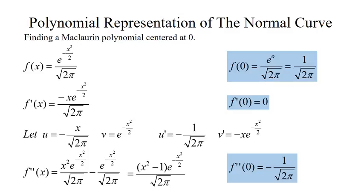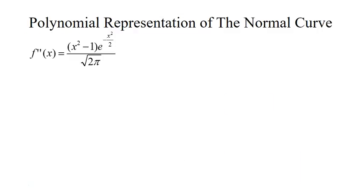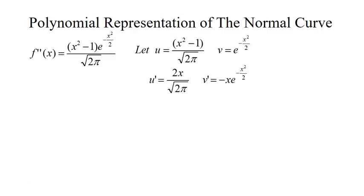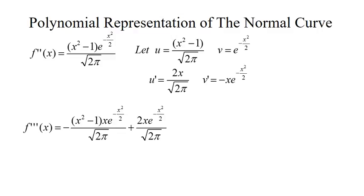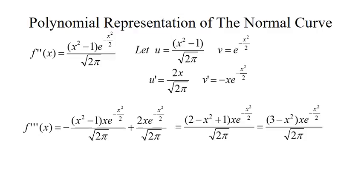Evaluating at 0 we get negative 1 over the square root of 2 pi. Remember these are going to be the coefficients for our polynomial. For the next derivative, we let u equal x squared minus 1 over the square root of 2 pi and v remain the same as before. Plugging into the product rule and factoring out the common factors — e to the negative x squared over 2 and x over the square root of 2 pi — we're left with 3 minus x squared. Evaluating at 0 we get 0.